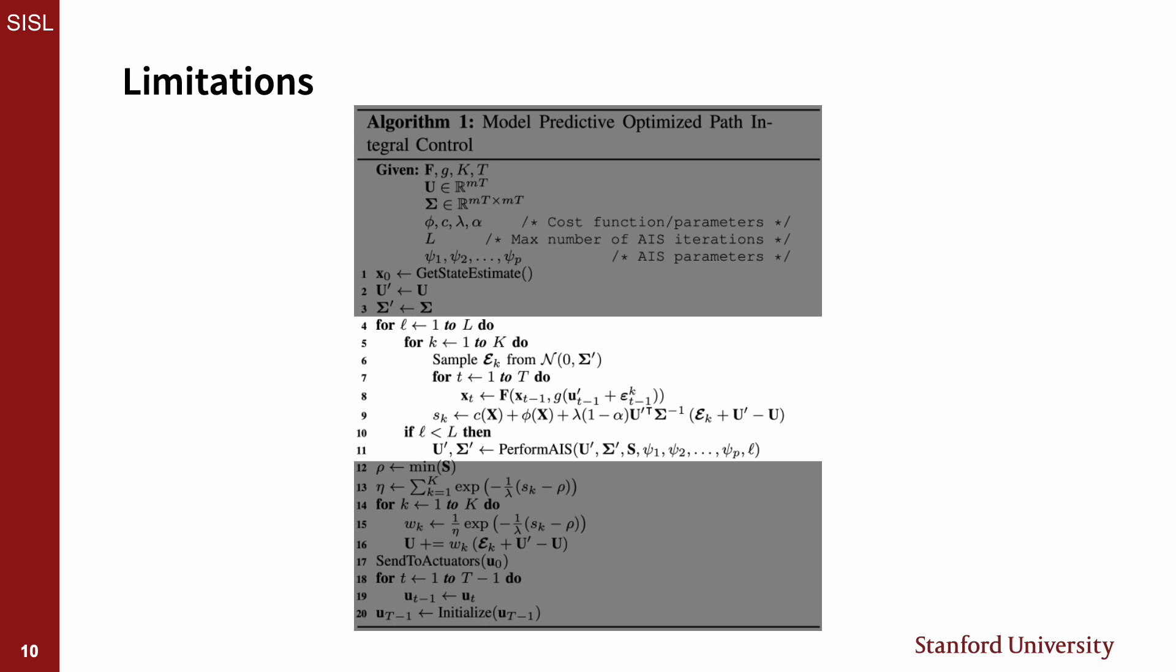Lines 4 through 11 are the computationally heavy portions of the algorithm, where lines 5 through 9 are similar to MPPI and can be run in parallel. So, given k times l effective samples, MPPI would propagate the system dynamics in parallel for all k times l samples.